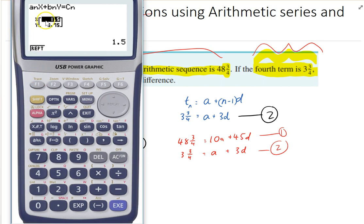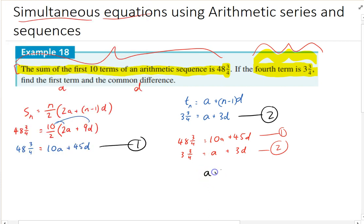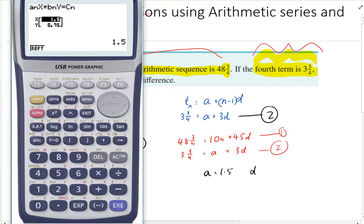All right. So x value is our a value, which is 1.5, and our y value is 0.75. And our common difference, what did it say? 0.75.